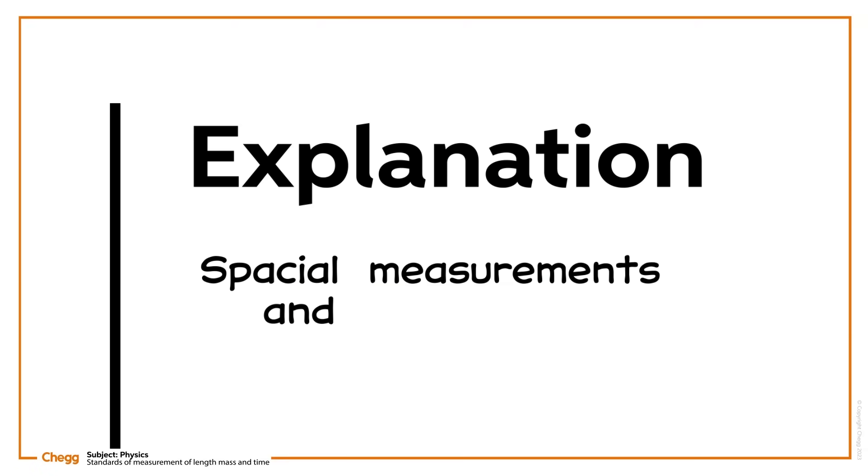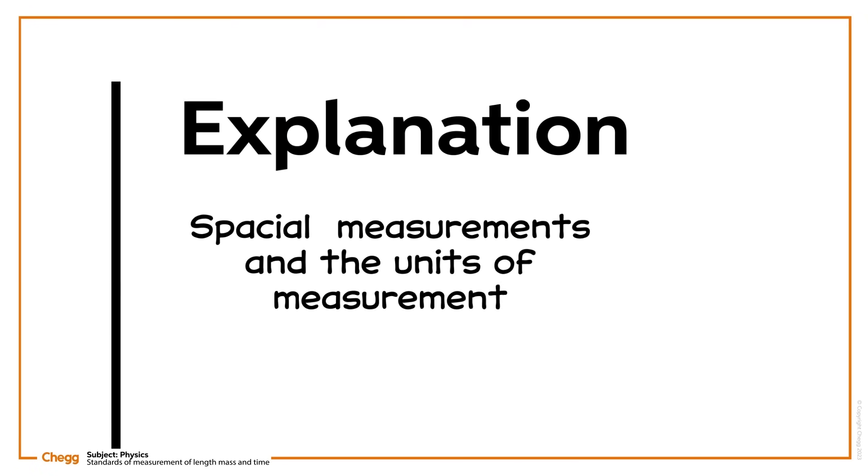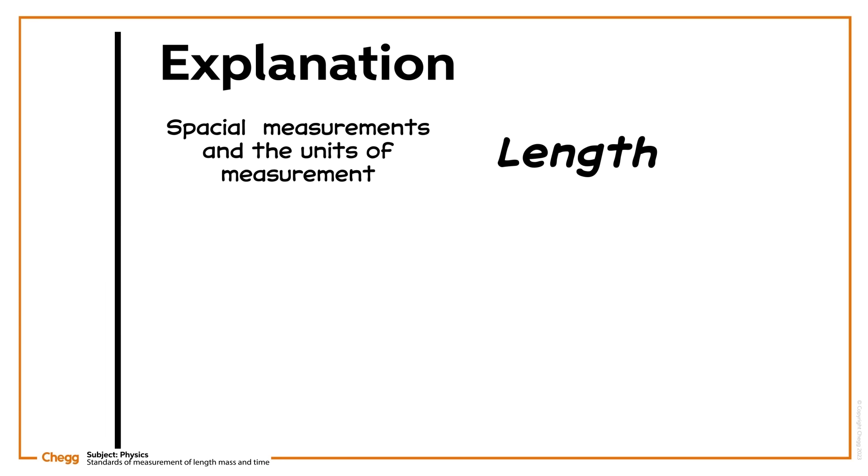Spatial measurements and the units of measurement are split into three main categories: length, mass, and time. When we talk about lengths, we're referring to the distance, displacement, height, depth, and length of objects. Each of these is essentially the same thing, they're all lengths, but we use the different terms based on where we're observing from.